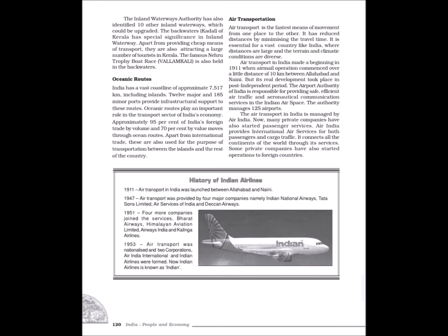The Inland Waterways Authority has also identified 10 other inland waterways which could be upgraded. The backwaters of Kerala have special significance in inland waterways — apart from providing cheap means of transport, they attract large numbers of tourists. The famous Nehru Trophy boat race (Vallamkali) is also held in the backwaters. Oceanic routes: India has a vast coastline of approximately 7,517 km including islands. 12 major and 185 minor ports provide infrastructural support. Approximately 95% of India's foreign trade by volume and 70% by value moves through ocean routes, and they are also used for transportation between the islands and the rest of the country.